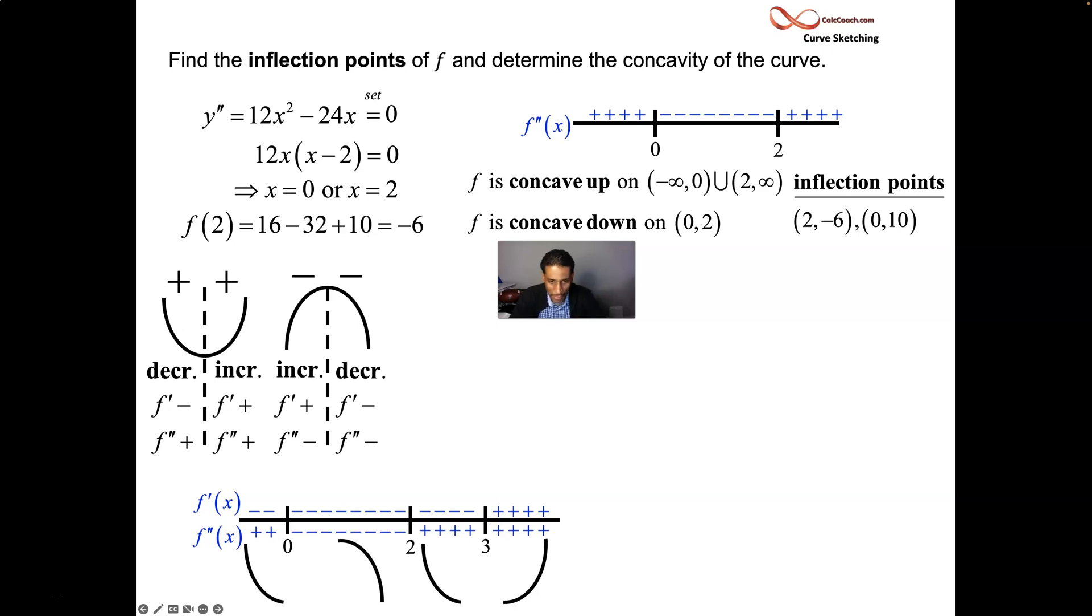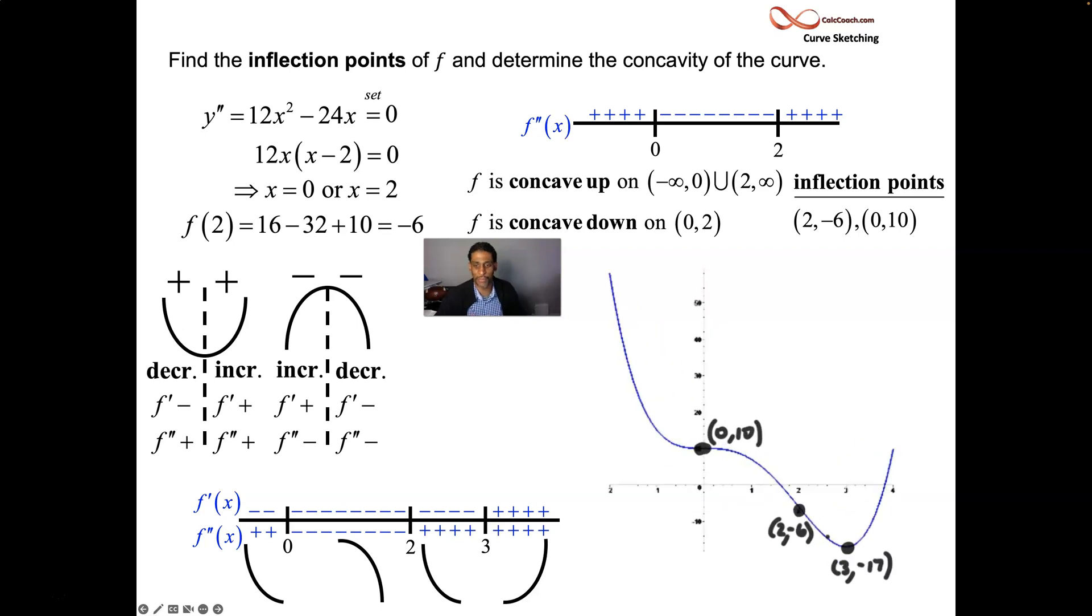That's all we need. So we plot the points. There's three of them. There's 2, negative 6, and 0, 10, together with the 3, it was a negative 17. And we connect those three points with these shapes. And we arrive at this graph. Quite amazing. It's been 10 minutes now. Sorry to go so long. But hopefully that was helpful to you.